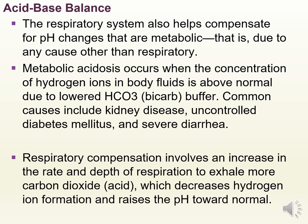Patients with metabolic acidosis are at risk for hyperkalemia — as the patient becomes more acidic, the potassium level rises. We may see muscle twitching, muscle weakness, flaccid paralysis, and increased risk for arrhythmias. The patient's respiratory rate will increase as the body tries to remove acids. Treatment depends on the cause: for DKA, give insulin and fluids; for anorexia, give TPN or nutrition. Respiratory compensation involves increasing the rate and depth of respiration to exhale more carbon dioxide, decreasing hydrogen ion formation and raising the pH toward normal.